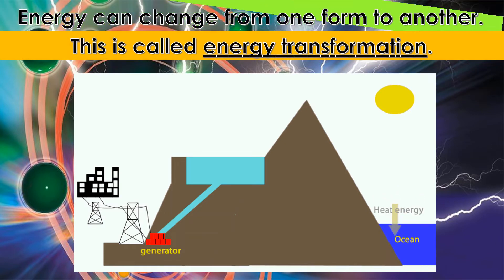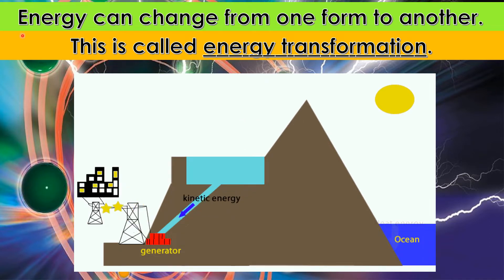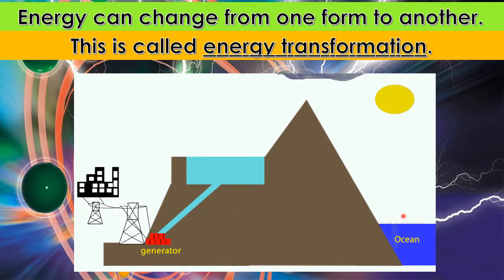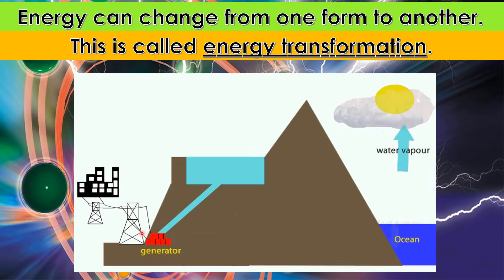Energy can change from one form to another. This is called energy transformation. In this picture, there is heat energy because it's hot, and then the water vapor goes up. In the clouds, there is gravitational potential energy. Then the water will go down as rain — that is kinetic energy. It will go to different generators and they will make electrical energy. So that is energy transformation.